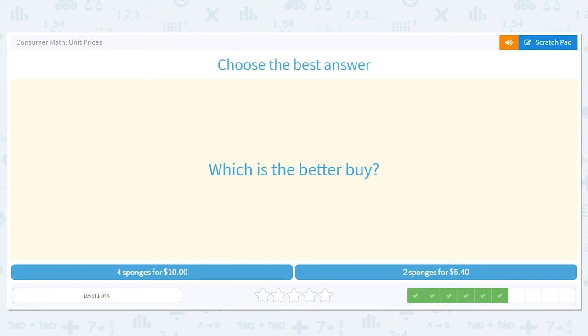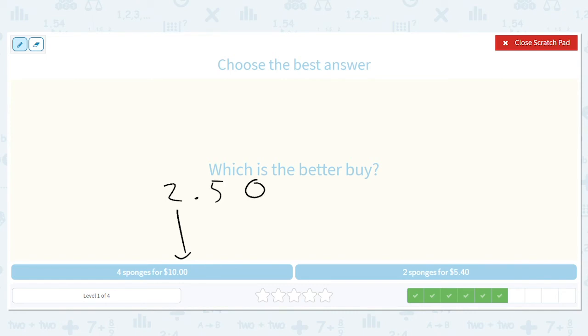What's the better buy? 4 sponges for $10 or 2 sponges for $5.40? So now here technically we have to do some math. 4 sponges for $10, that's going to be $2.50 a sponge. 2 sponges for $5.40, well you can already tell that's a worse deal because if this were $5 it would be $2.50. So it's going to be more than $2.50. So this is going to be more expensive, the one on the right. So the one on the left is a better deal.